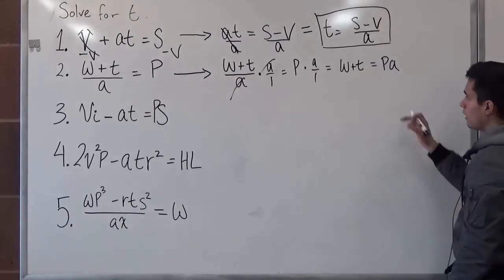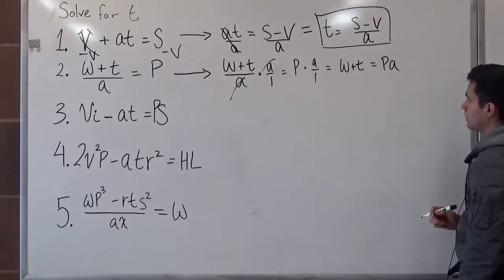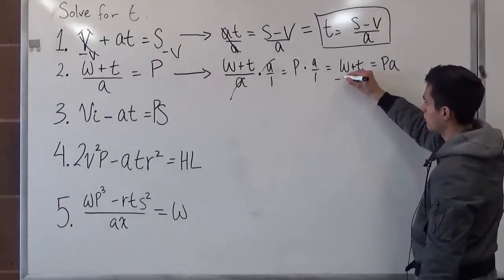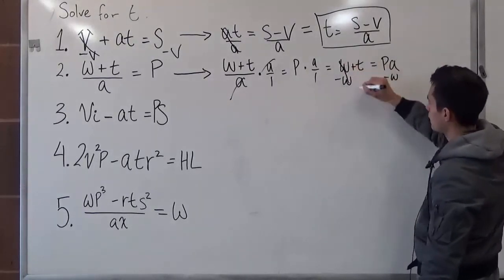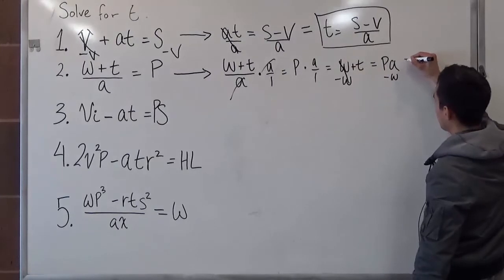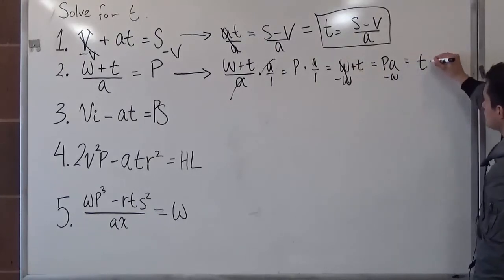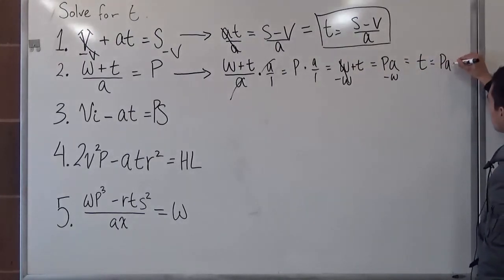So now we just want to get t by itself, and this is the very simple part. You just have to subtract w from both sides. This cancels out, and we're left with t is equal to p a minus w.